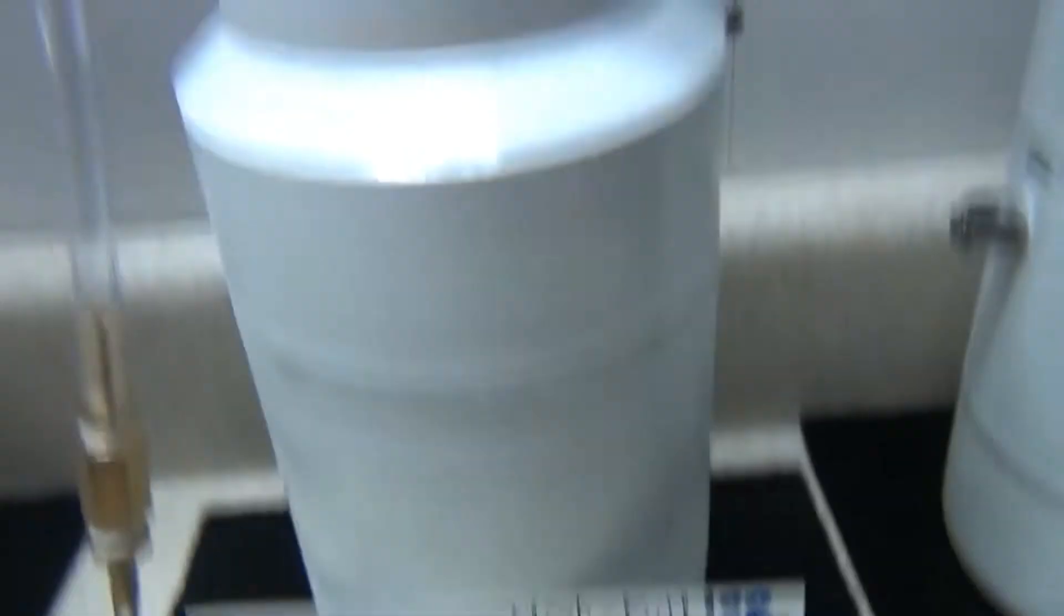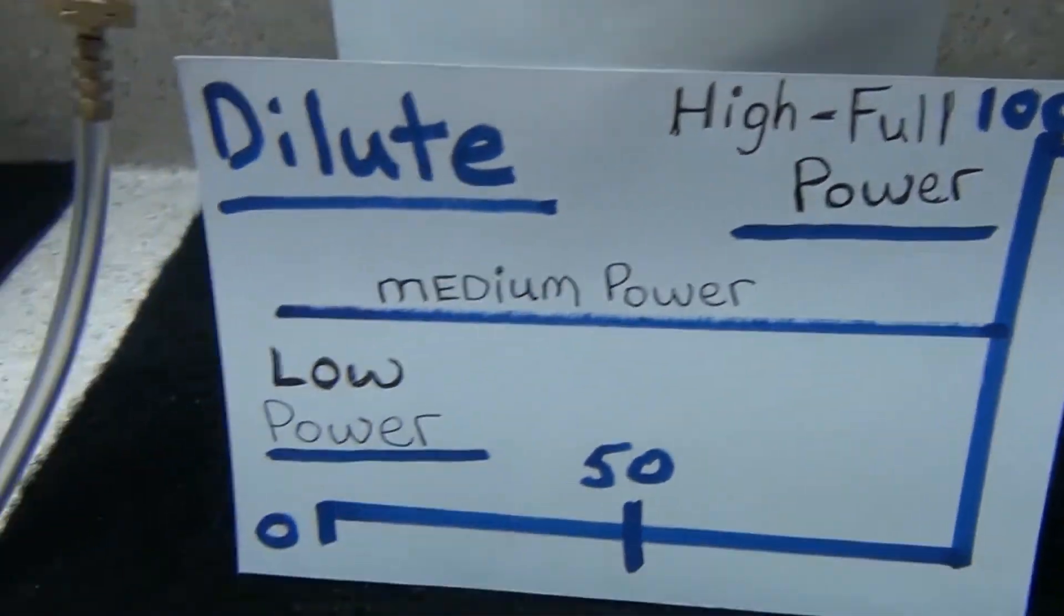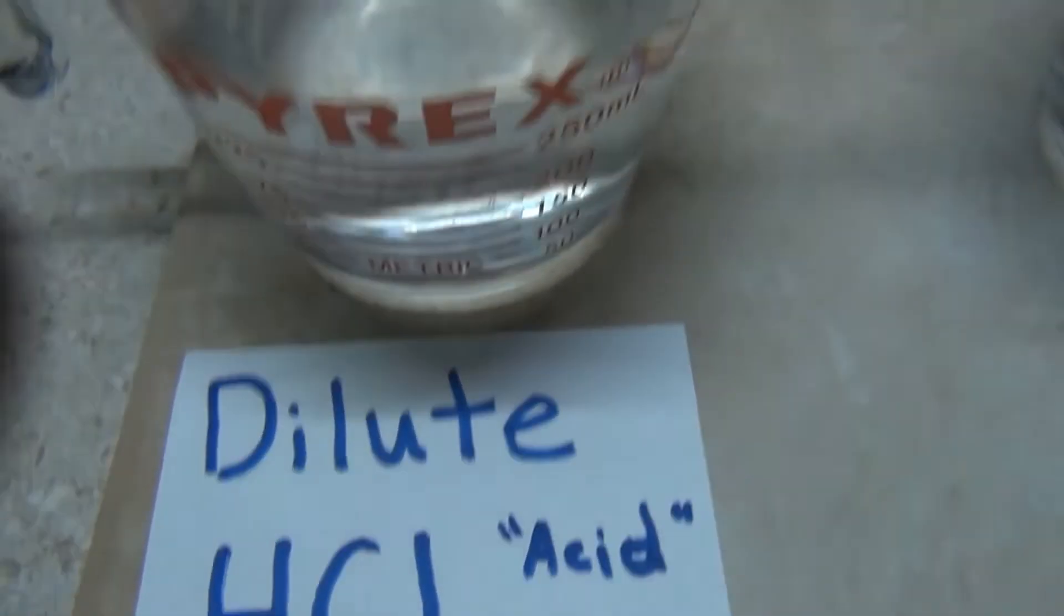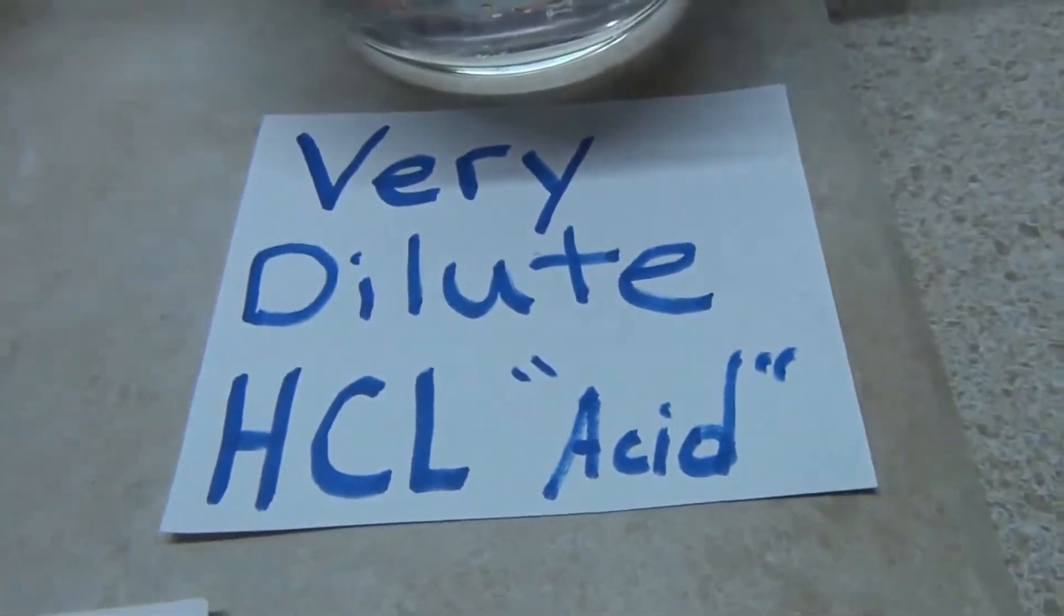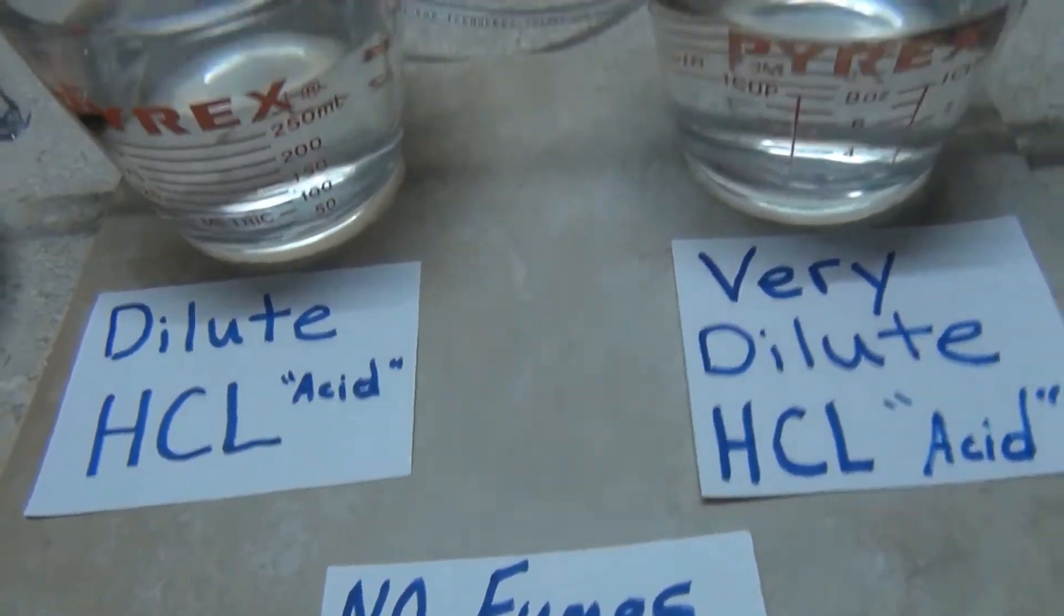You see all my stuff's right there. There's many settings for this. You don't have to run this thing at full power 100% all the time. You want to start low and slow. So I have a dilute acid solution here and then I have a very dilute acid solution. See there's no more fumes and it's a controlled reaction.